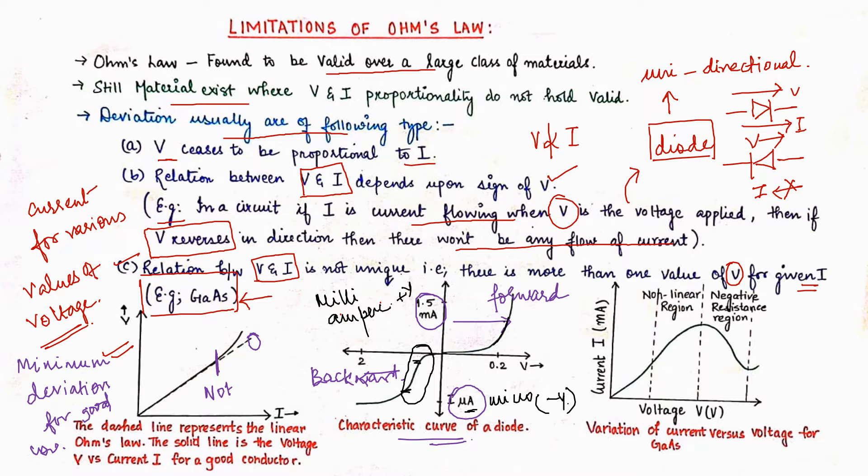Now the third graph as we can see is the variation of current versus voltage for GaAs. It is a combination of two conductors. So over here see it is linearly increasing up to this particular point, and hereafter it is decreasing little sloppily and then there is a point coming where there is neither an increase nor a decrease.